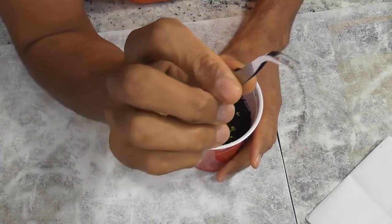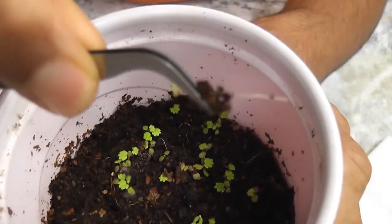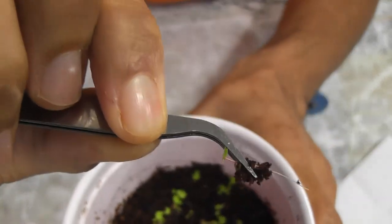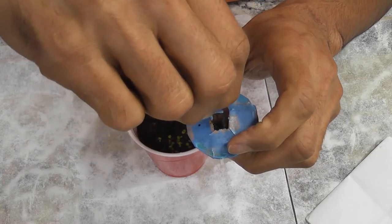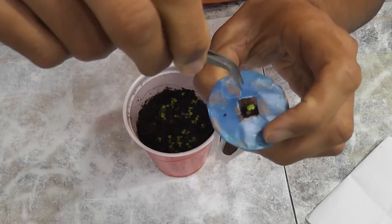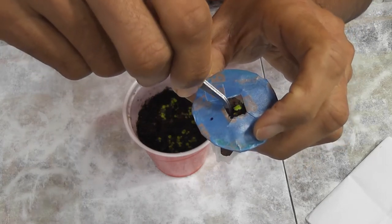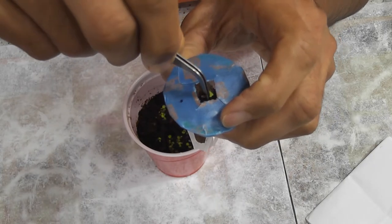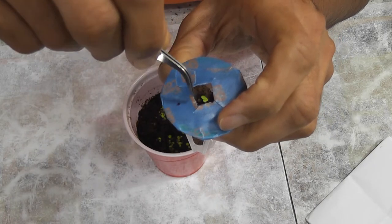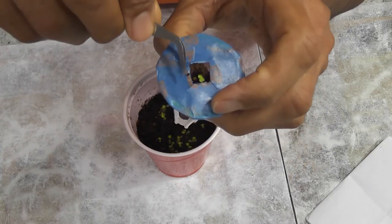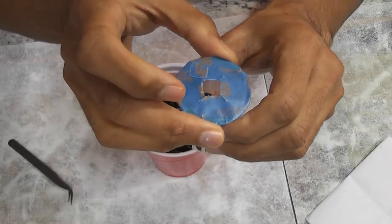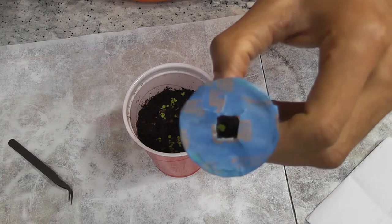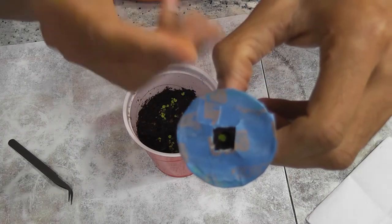Using a tweezer, gently pick a plant. Here you can see the little plant. Now drop it into the Aerogarden pod. By the way, if you want to know the trick for making these refill pods, please follow the link in the description below. Now I am placing the seedling gently into the pod. Be very careful—the seedling may break if you press too hard. Now it's ready to place in Aerogarden.